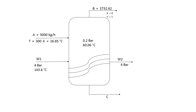According to the problem, we need to calculate the saturated steam feed rate, which we denote as W1. This steam is working at 4 bar and exits at the same pressure and temperature.